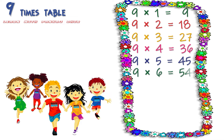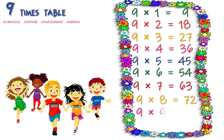9 sixes are 54, 9 sevens are 63, 9 eights are 72, 9 nines are 81, 9 tens are 90.